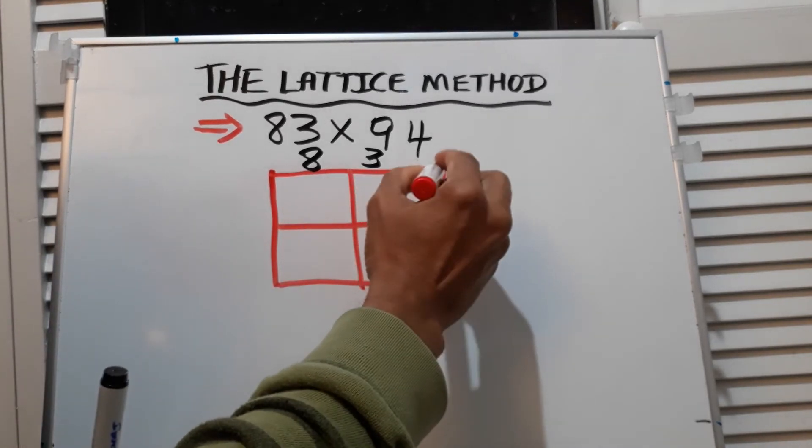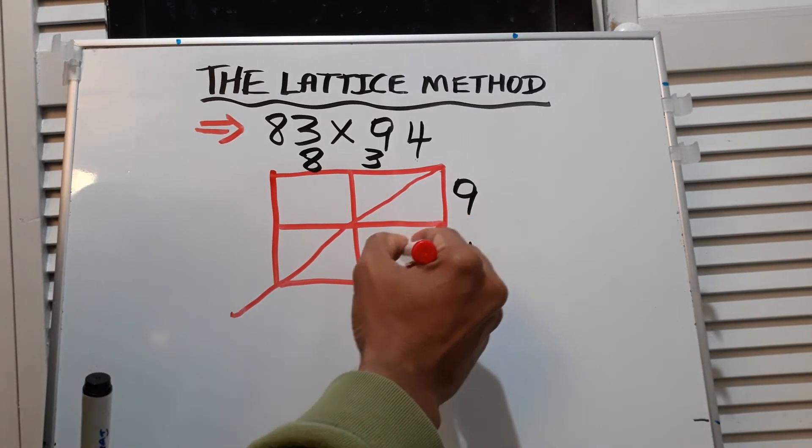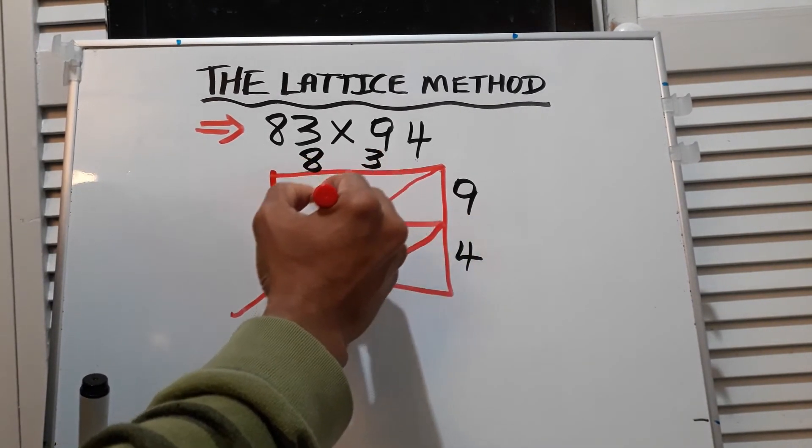Now we make diagonal lines in the middle of each box. We're going past here - I'll tell you why we pass the line.